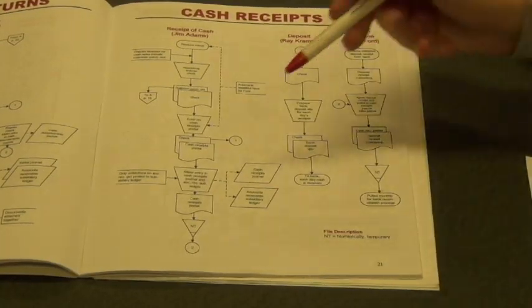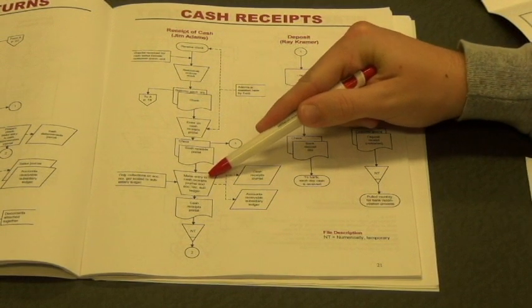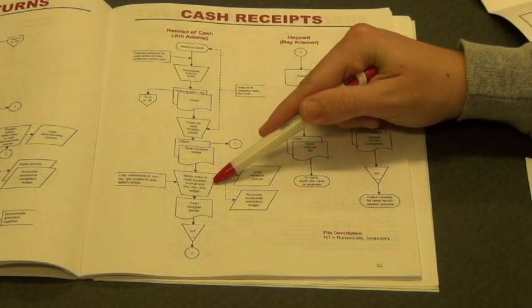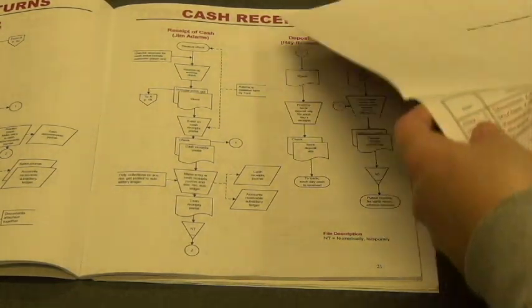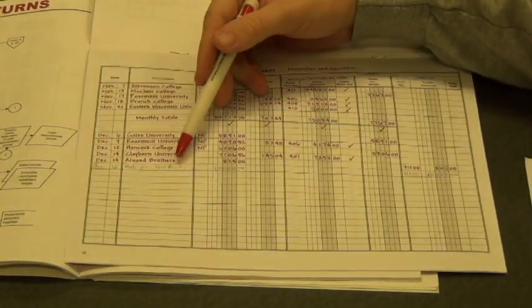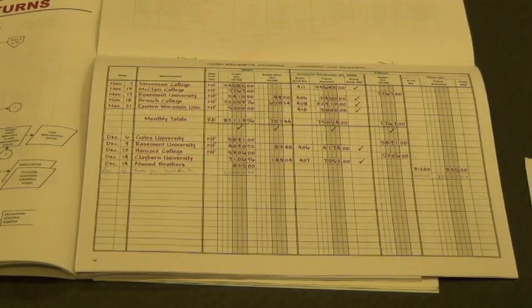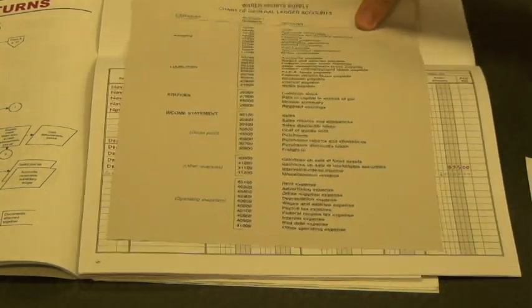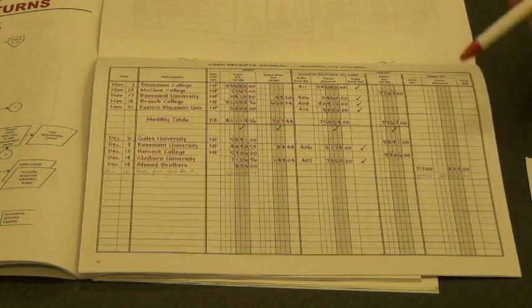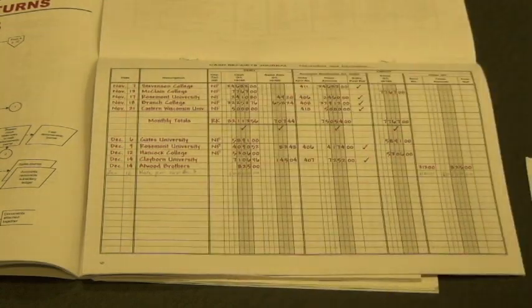Back to the flowchart — it says to make an entry in the cash receipts journal and accounts receivable subsidiary ledger. We're not going to use the accounts receivable subsidiary ledger because it's a loan, so we only make an entry in the cash receipts journal. It's December 16th, a note from First Bank for $80,000 — cash is debited for $80,000. The credit account number is 21,000 for notes payable, which you get from document number 2. The amount credited is $80,000. Keep a T-account: debit cash $80,000, credit notes payable $80,000.